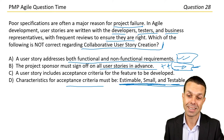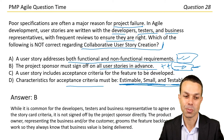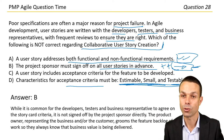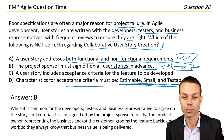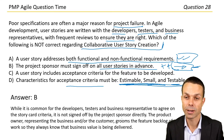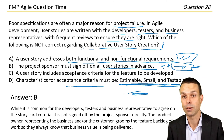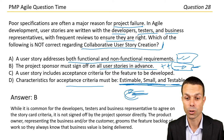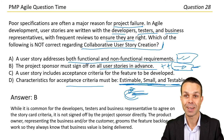Answer B is incorrect. While it is common for developers, testers, and business representatives to agree on the story card criteria, it is not signed off by the project sponsor directly. The product owner, representing the business or customer, grooms the feature backlog, always ensuring that the highest-value items are going to be delivered.